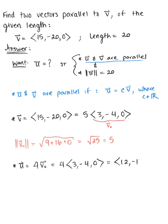Which gives us 12, negative 16, 0, we've obtained a vector that is parallel to this given V, but has a length of 20.